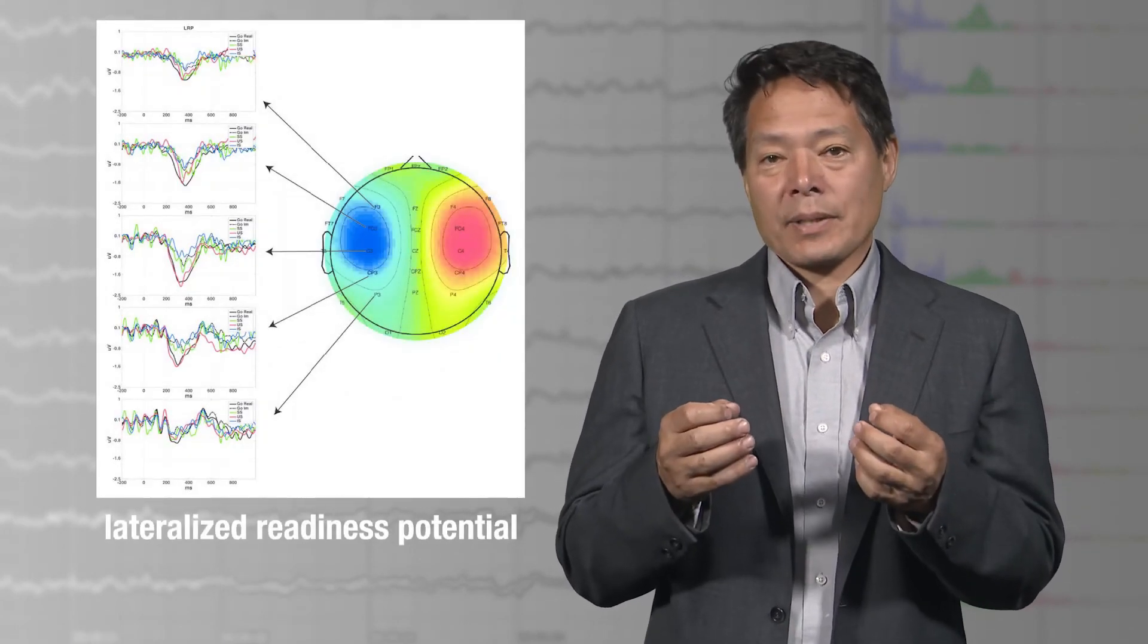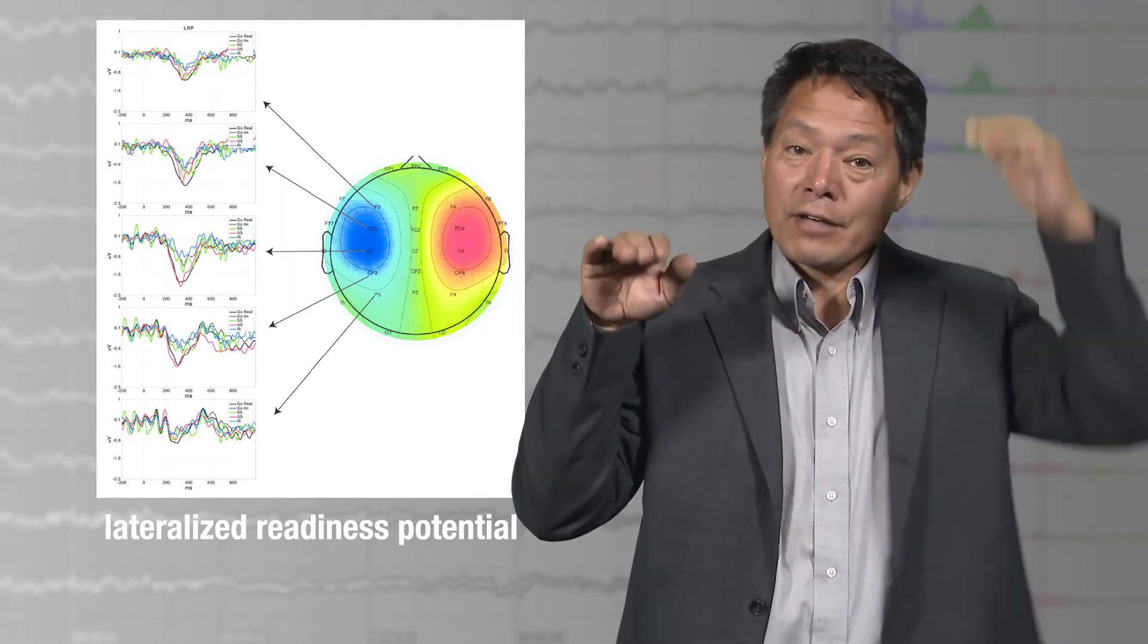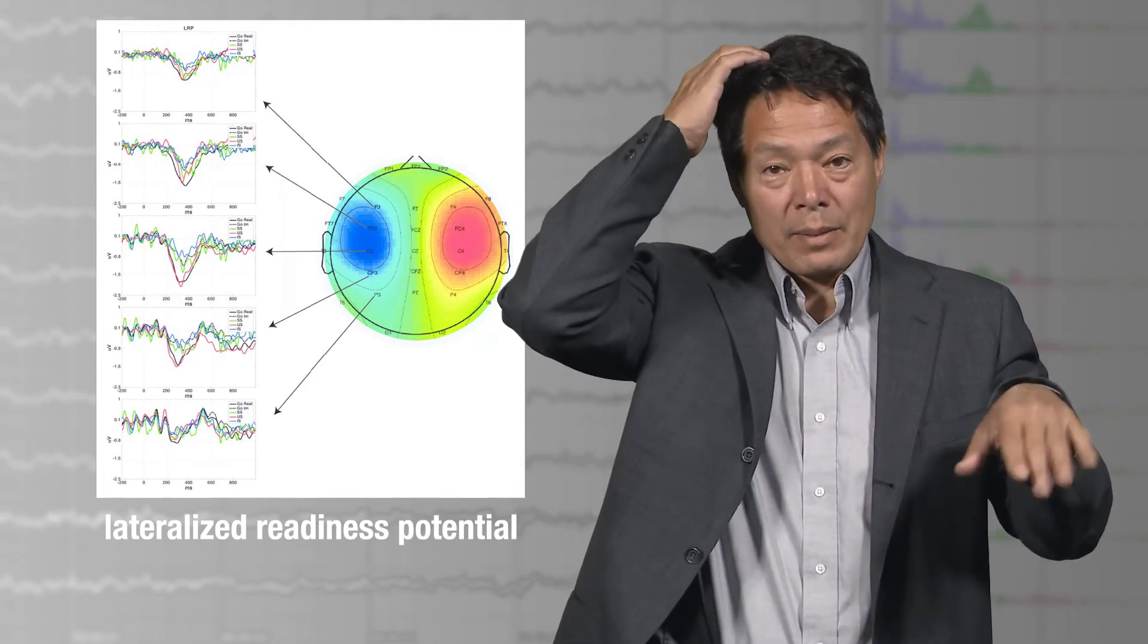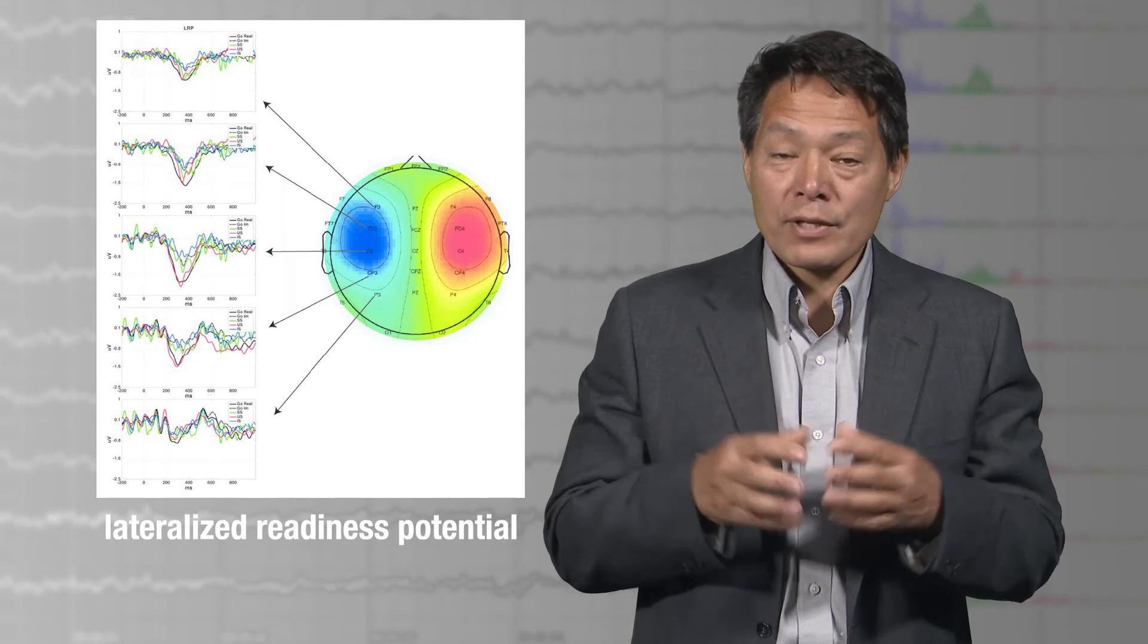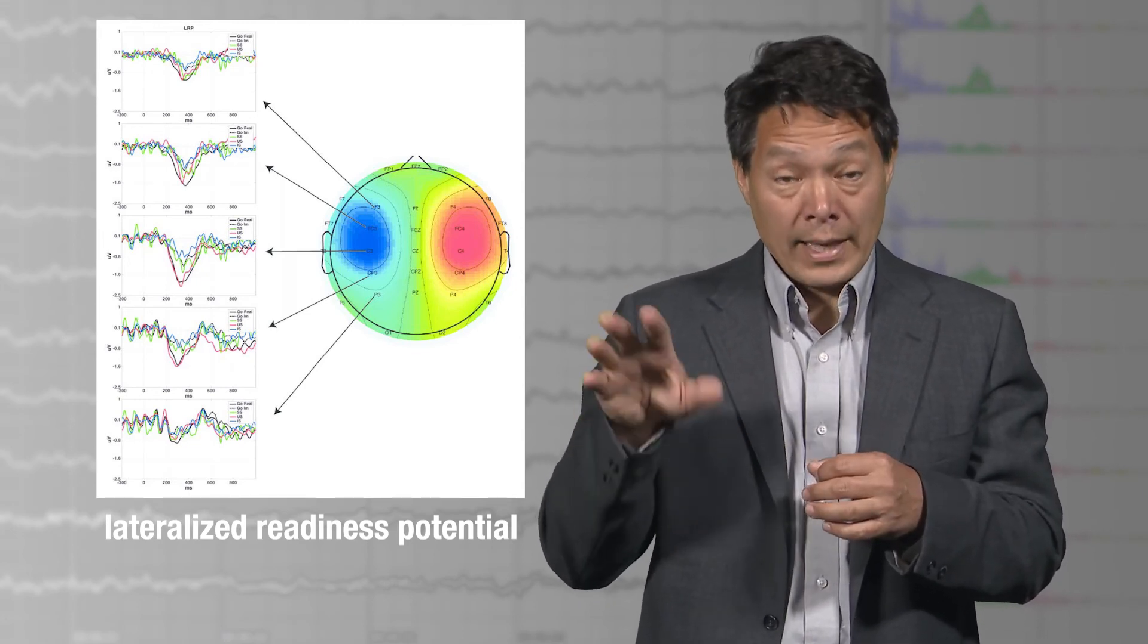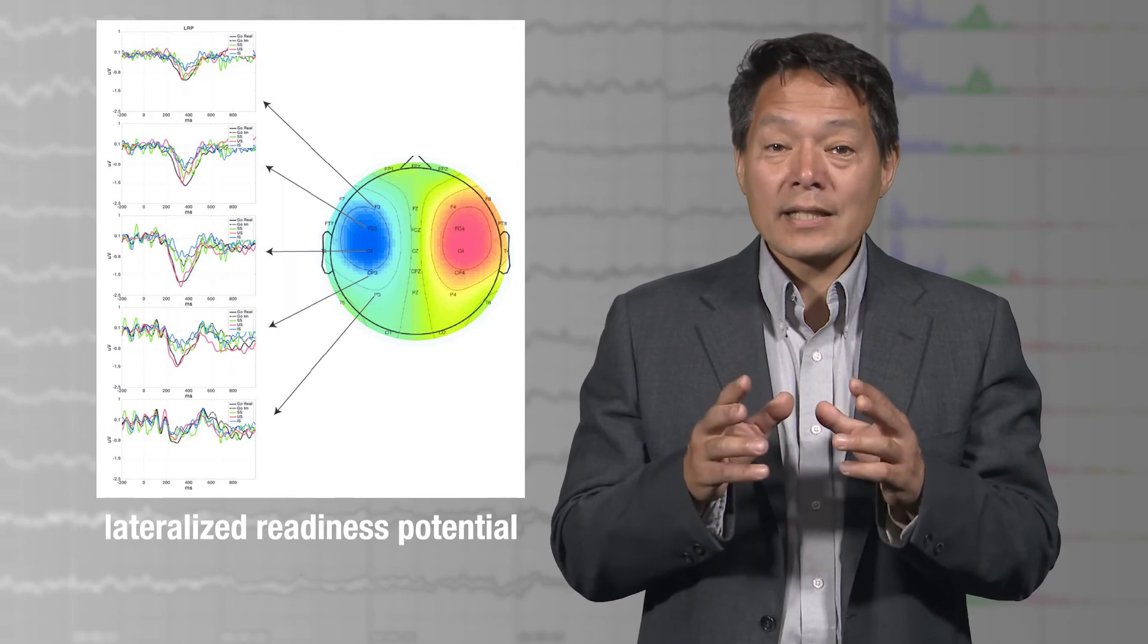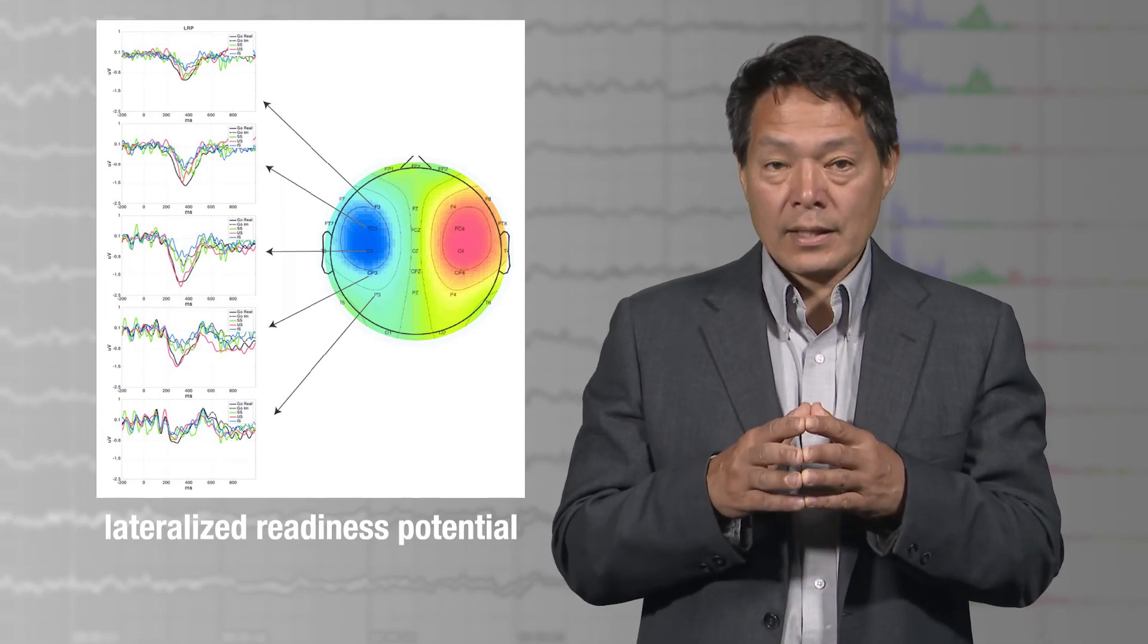To make matters more complicated, there's another event-related potential called the lateralized readiness potential, which is measured above motor output areas right about here. When I move my right hand, the contralateral or left side typically shows more activity than the ipsilateral or right side, and vice versa when I move my left hand. The difference between voltage here and here is called the lateralized readiness potential, which also precedes the time of first conscious awareness of wanting to move. That is, it begins about 600 to 800 milliseconds before time M, namely the time of moving my hand, and also precedes time W, which precedes time M by 200 to 400 milliseconds. So, we actually have two event-related potentials that begin to be detectable before we consciously become aware of intending or wanting to move.